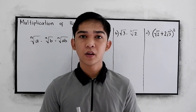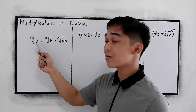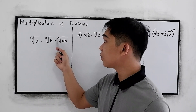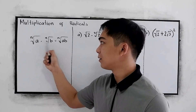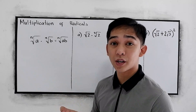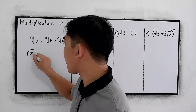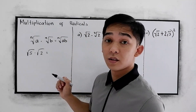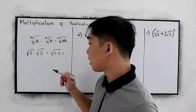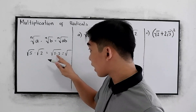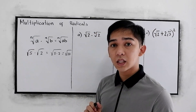This time we have special cases. In our previous lesson, we discussed that if we have n root of a times n root of b, that is equal to n root of a times b — we're just going to multiply our radicand, the expression inside our radical sign. So if we have square root of 5 times square root of 2, that is simply square root of 5 times 2, which is square root of 10.